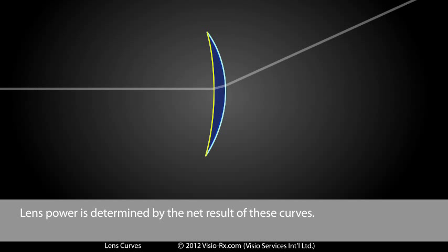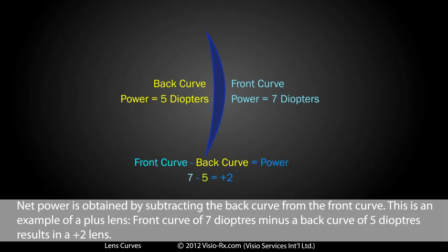Lens power is determined by the net result of these curves. Net power is obtained by subtracting the back curve from the front curve.